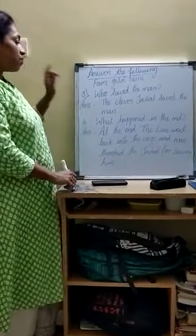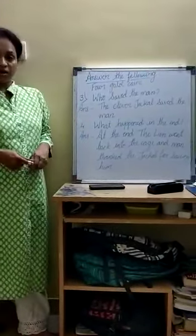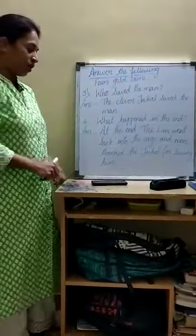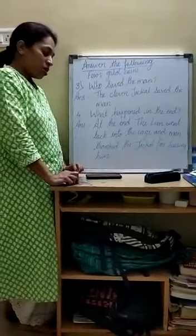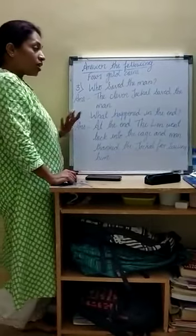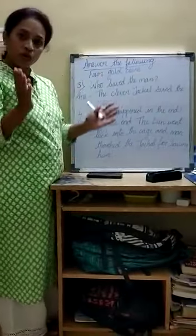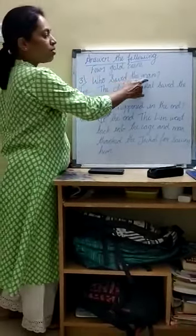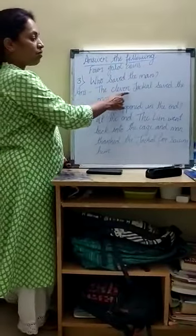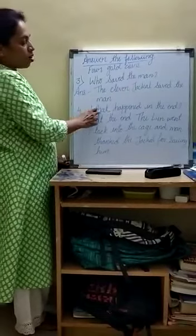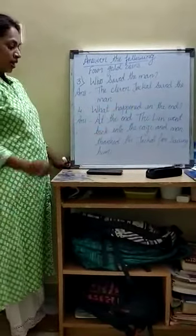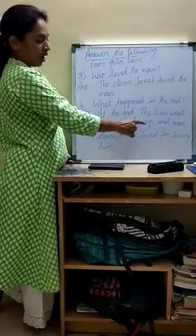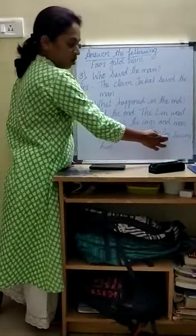So these are the question answers. First question: 'What did the lion ask the man to do?' — The lion asked the man to open the door of the cage. Second: 'What reward did the lion promise the man?' — If you open the door of the cage, I shall give you four gold coins. Third: 'Who saved the man?' — The clever jackal saved the man. Fourth: 'What happened in the end?' — At the end, the lion went back into the cage and the man thanked the jackal for saving him.